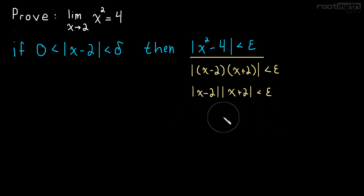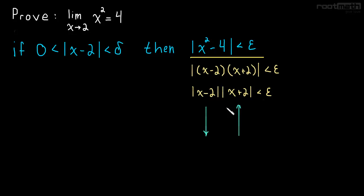The problem is we don't have any control over x plus two. Why is that a problem? Well, what if we force the absolute value of x minus two to be really small, and when we do that, for some reason the absolute value of x plus two gets really, really big — way bigger than we forced x minus two to get small? Then when we multiply them together, we might get a big number, and in particular we might get something bigger than epsilon, which is a problem.